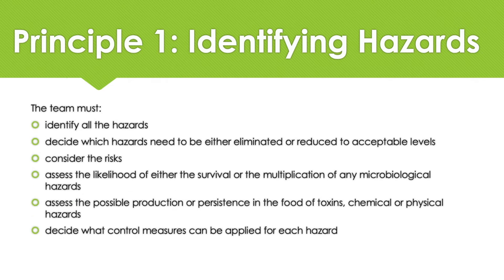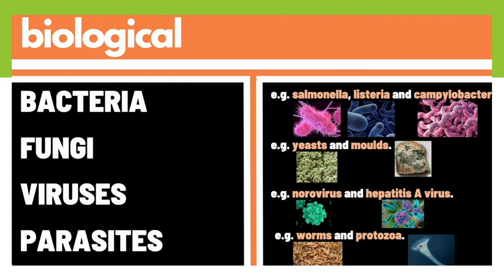Principle one is to conduct a hazard analysis. This is where the processes are evaluated and where we identify where hazards can be introduced. All hazards are assessed and categorised into four groups: biological, physical, chemical and allergenic hazards. The general definition of a hazard related to food safety is conditions or contaminants that can cause illness or injury. Biological hazards can include microorganisms such as bacteria, viruses, yeasts, moulds and parasites.